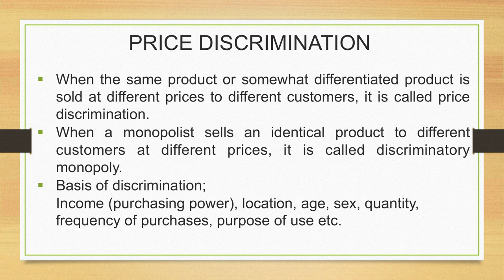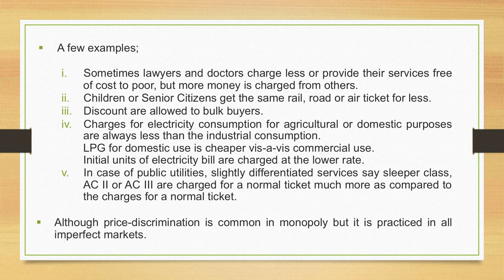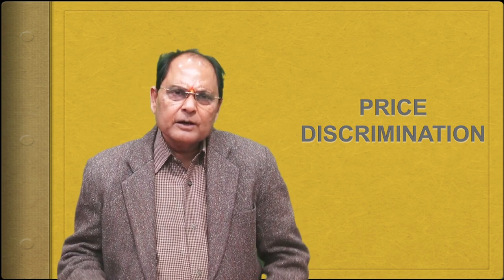Another very important basis is the purpose of use. LPG for domestic purposes sells at a lower price, whereas LPG for commercial purposes sells at a higher price. Similarly, electricity for industrial use is given at a higher price, but electricity for agriculture is given either free or at a subsidized price. So purpose of use is a significant basis of discrimination.